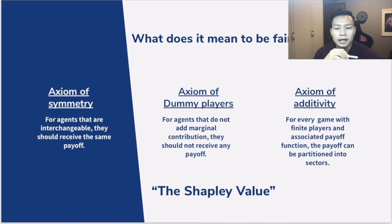The third and last one is the axiom of additivity. It's basically saying that for every finite games that are separable, the payoff of these games should also be able to be partitioned into smaller sectors. Shapley basically says that there's only one unique solution that satisfies all these axioms, and combining these, we get the Shapley value.